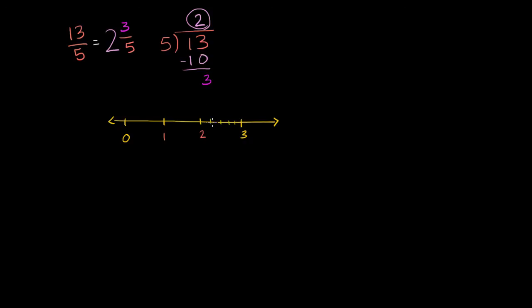So 3 of these fifths. So 1, 2, 3 puts us right over there. That is 13 over 5. We went 1, 2, and then we looked at the fifths. We went 1, 2, 3 fifths. 2 and 3 fifths, or 13 over 5.